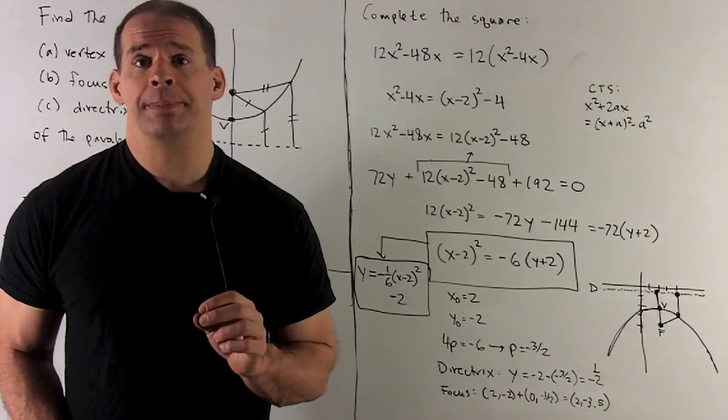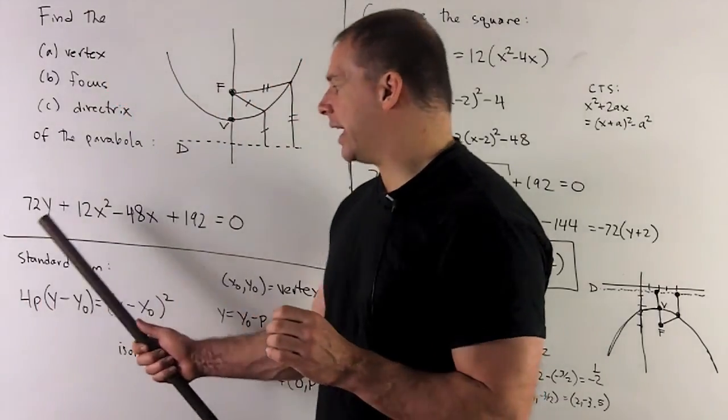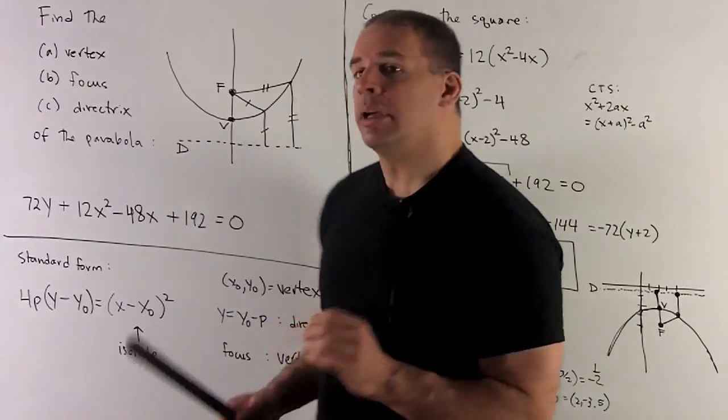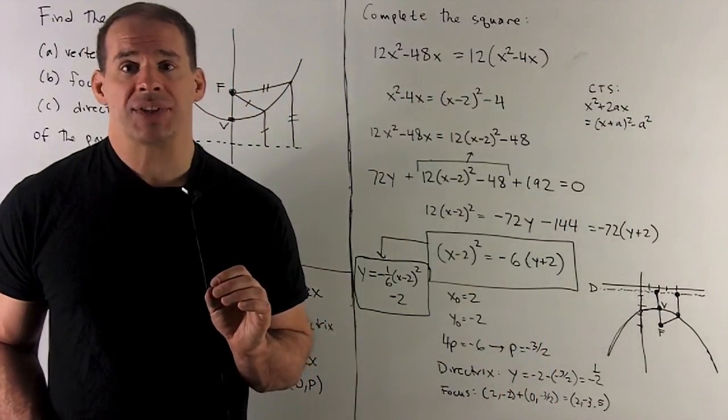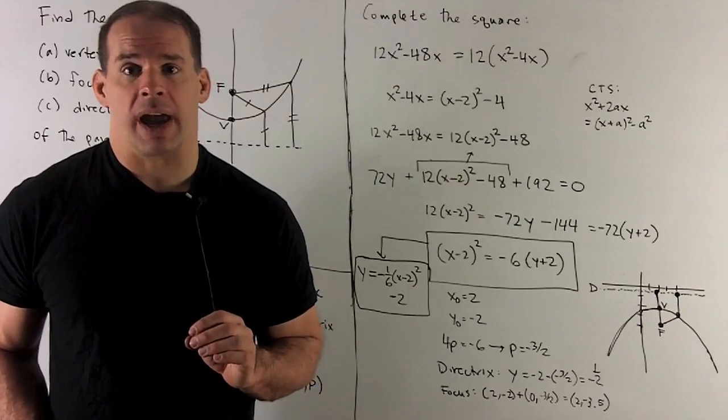To proceed, we complete the square. What are we going to do? We're going to isolate all the terms with an X in them, 12X² - 48X. Factor the 12 out, I complete the square on X² - 4X.